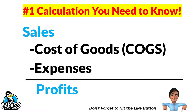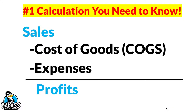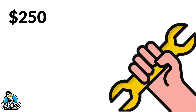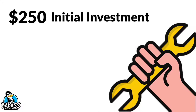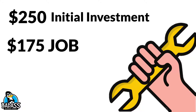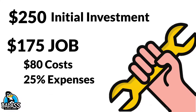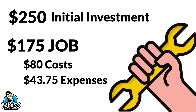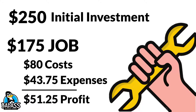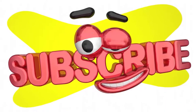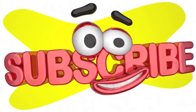Let's go back to that $250 piece of equipment. The initial investment is $250. Let's say this equipment allows you to provide a service you will sell for $175. The cost of goods for the service are $80, covering two hours of labor plus parts. You also need to set aside 25% for other expenses, which means $43.75. Plugging into sales minus cost of goods minus expenses equals profits, we know that we are looking at a potential profit of $51.25 per job.